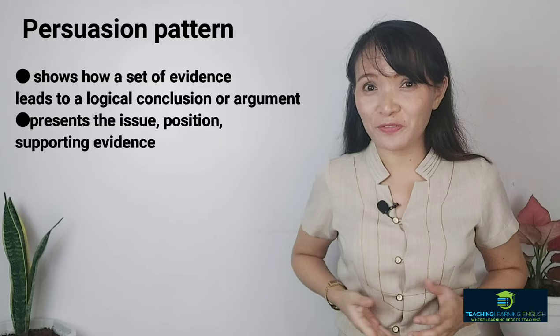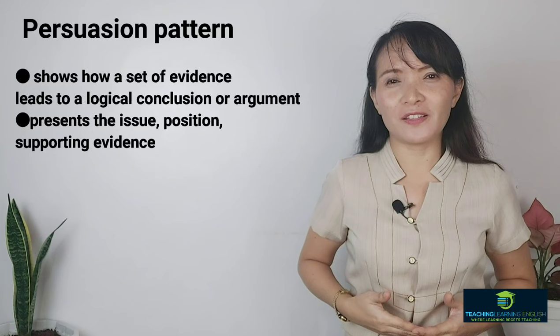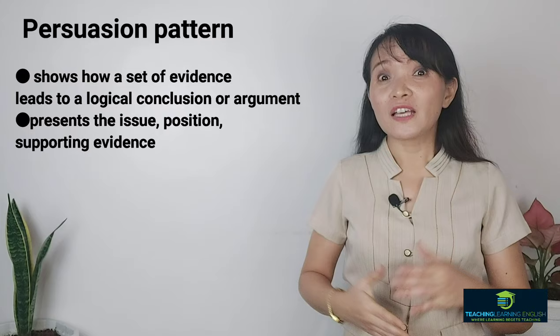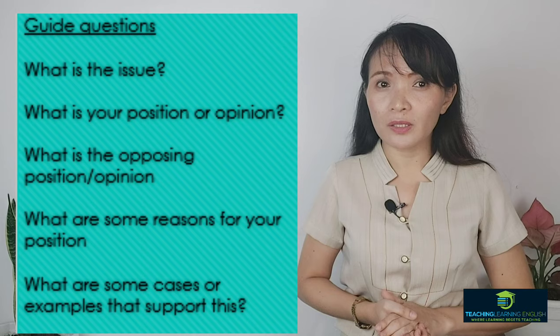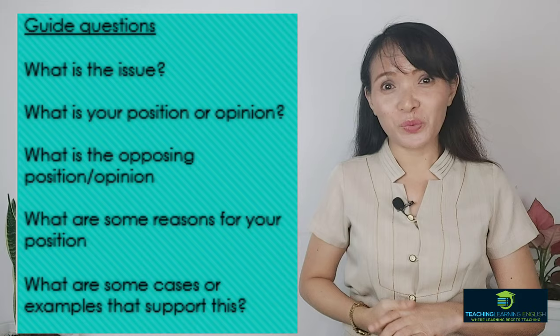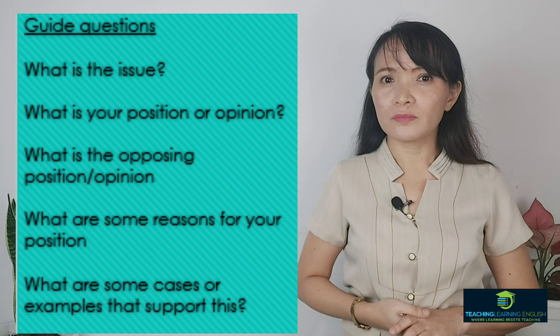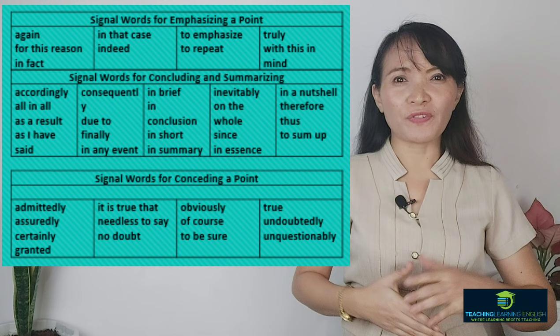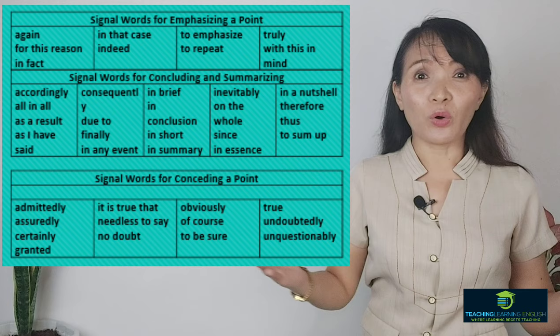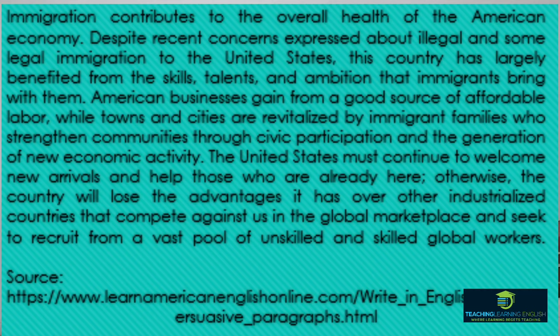The ninth and last pattern is persuasion. This pattern presents the issue, your position, and supporting evidence that supports the position. Guide questions include: what is the issue? What is your position or opinion? What is the opposing position? What are some reasons for your position? This is best applied when writing a position paper. Signal words are grouped into categories: words for emphasizing a point, words for concluding and summarizing, and words for considering a point. An example paragraph demonstrates the persuasion pattern.